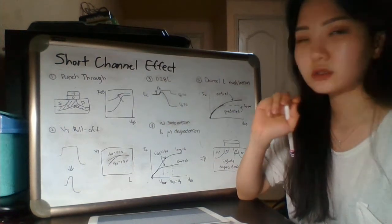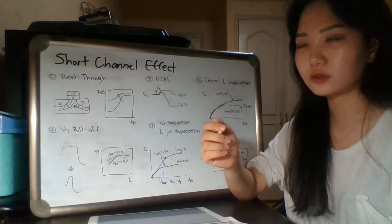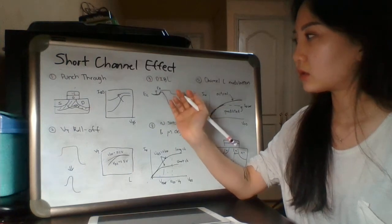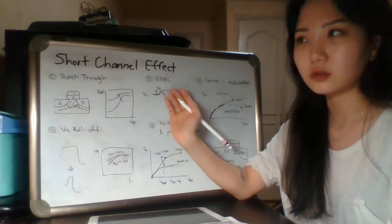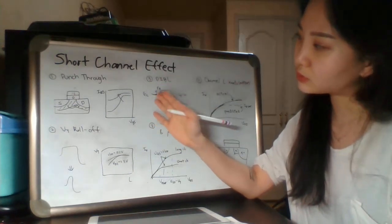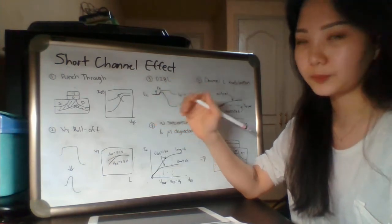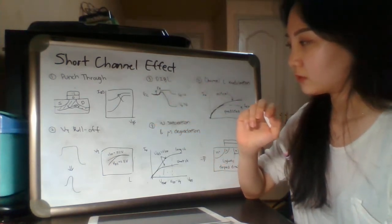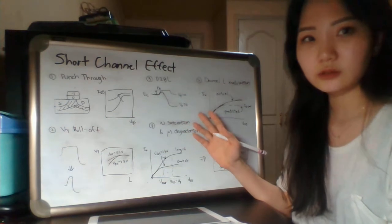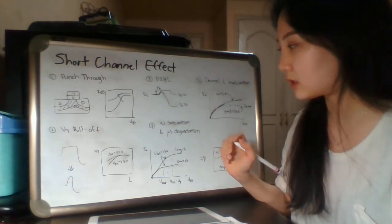When we apply bias to the drain in a short channel, the source-to-channel junction potential is lowered. Fourth is velocity saturation and mobility degradation.